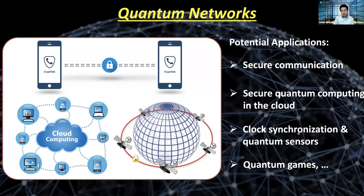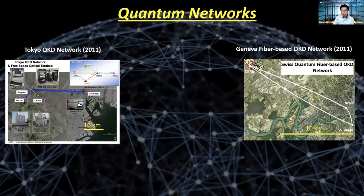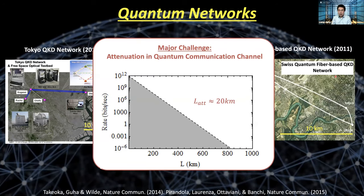For the quantum network, people have been working on it for more than ten years. If you look at existing networks — here's the Tokyo network and the Geneva network — they typically have a scale of tens of kilometers. The reason is that these networks are either free-space or fiber, and both absorb photons. The typical length scale over which a single photon can survive is called the attenuation length, which is about 20 kilometers. The longer you go, the exponentially smaller the chance of successfully transmitting a single photon.